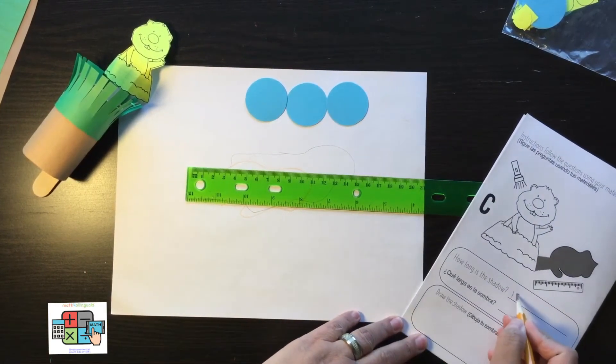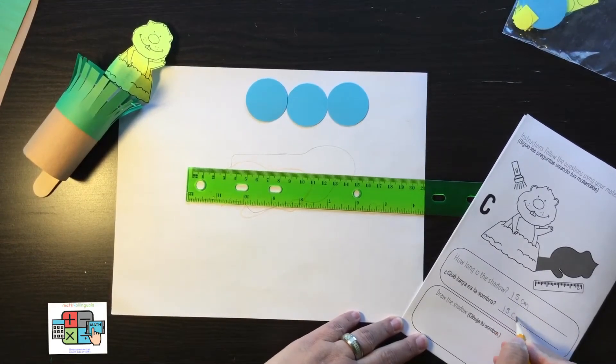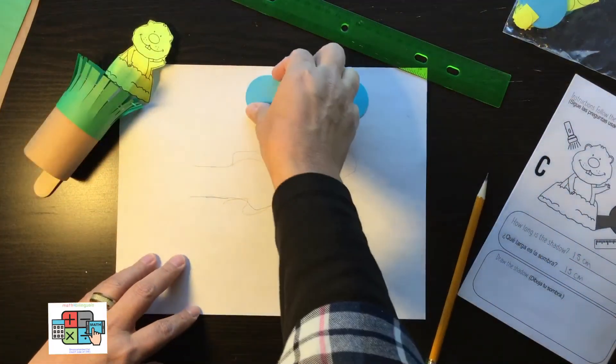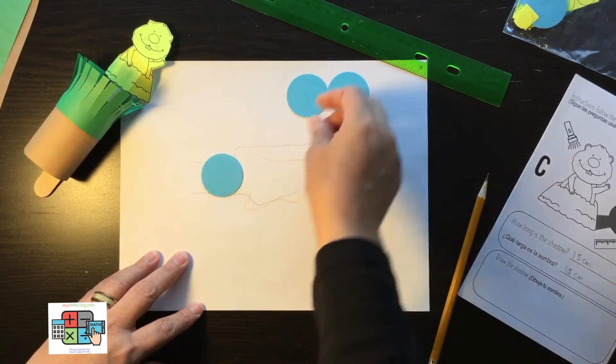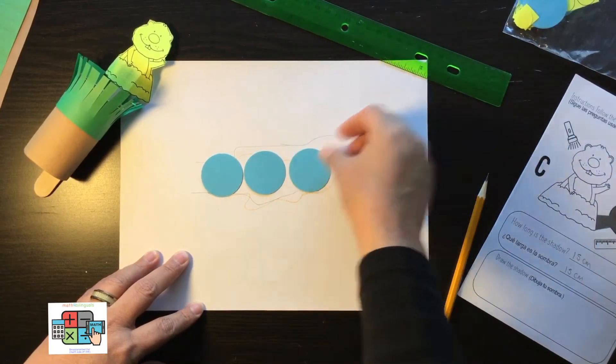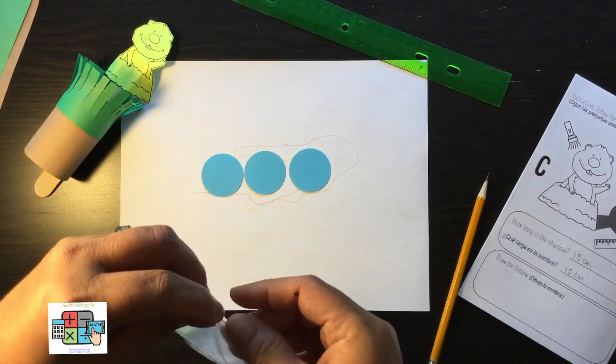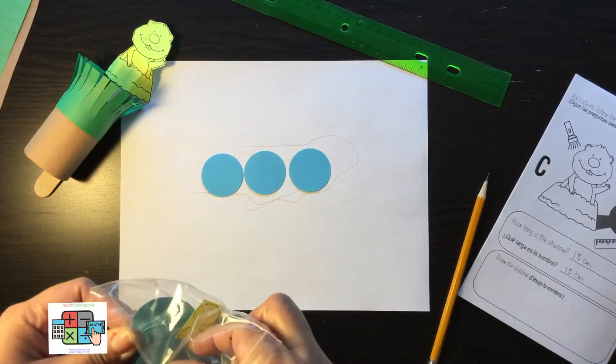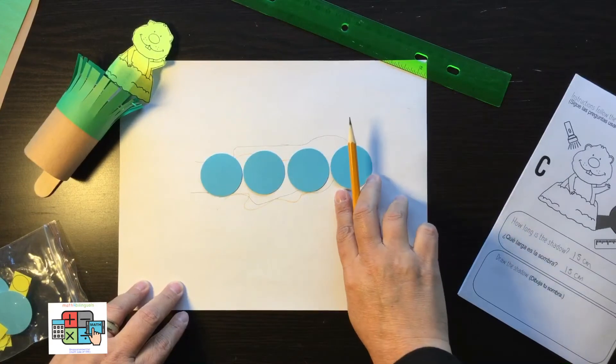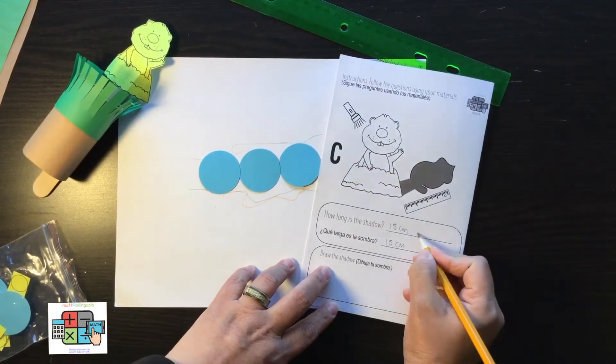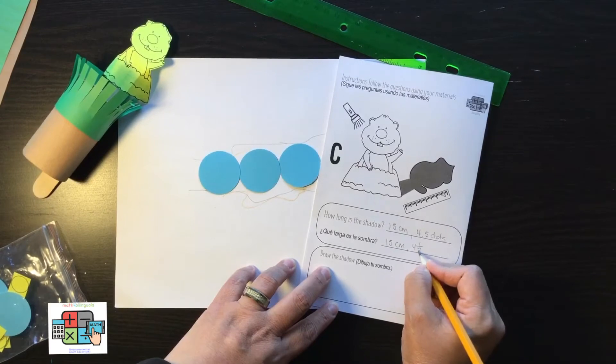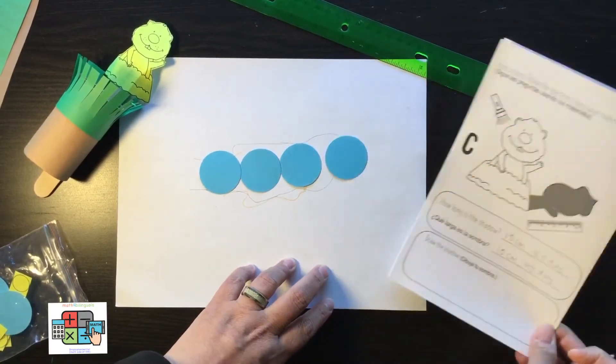How long is the shadow? 15 centimeters. Then I'm going to use my little dots here and place them so I have an idea of what that measurement is. Here's my other one, so it's about four, maybe four and a half dots. Four point five dots, or you can say it's four and a half dots.